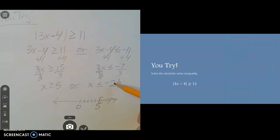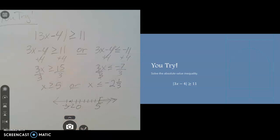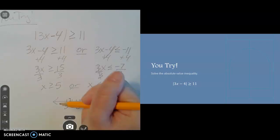For negative 2 and a third, let's see. Here's negative 1, there's negative 2, and here's negative 3. So negative 2 and a third is between negative 2 and negative 3. It's a little bit towards negative 2 on the number line. Since it's an or equal to, we'll use a bracket. Since it's less than, we're going to the left.